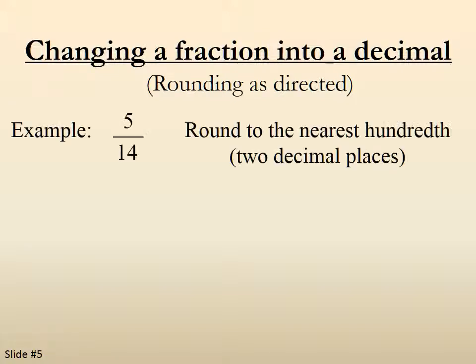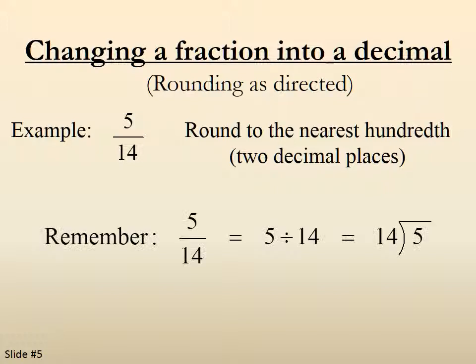We're going to change a fraction into a decimal, rounding as directed. Here, 5 over 14. We want to round to the nearest hundredth. That means two decimal places. The one we're going to choose here is 14 divided into 5.